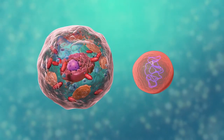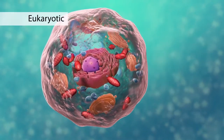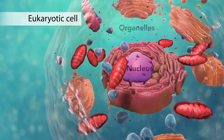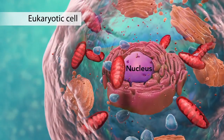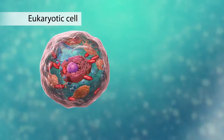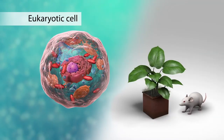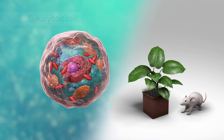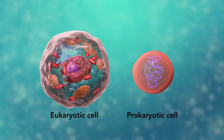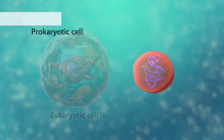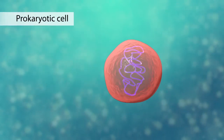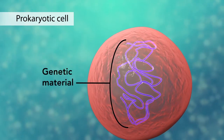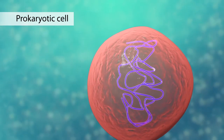There are two broad categories of cells. The first category is eukaryotic cells — they have organelles which include the nucleus and other special parts. Eukaryotic cells are more advanced, complex cells such as those found in plants and animals.